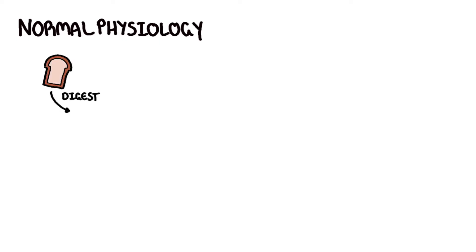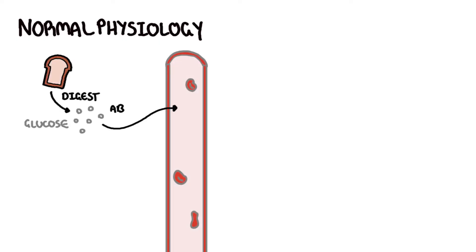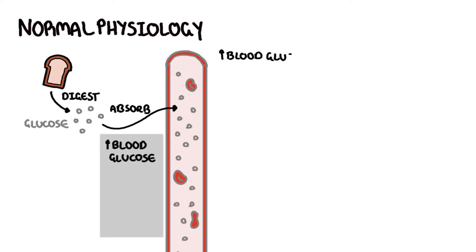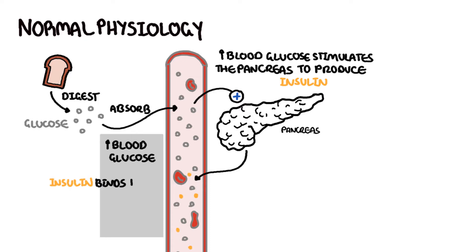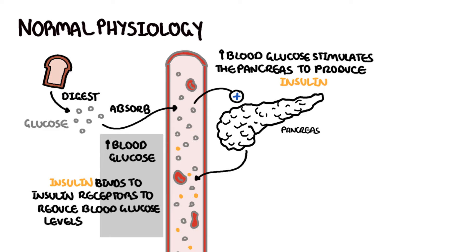Normally, when we eat carbohydrates such as bread, the body breaks this down and absorbs it in circulation as glucose, which is a type of sugar. Increased blood glucose levels will stimulate insulin secretion from the beta cells of the pancreas. Insulin promotes glucose storage in tissues by binding onto insulin receptors on the surface of cells around our body, to reduce blood sugar levels to normal range.